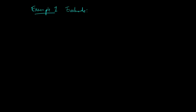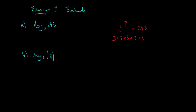The first example is evaluating logarithms — just working out the value of a logarithm. We'll do two examples: log base 3 of 243, and log base 2 of a quarter. For the first one, we consider what power of 3 gives 243. Working through it: 3 to the power of 5 equals 243. We replace 243 with 3 to the power of 5, then use the power rule to bring the 5 to the front. Since log base 3 of 3 is 1, the answer is 5.